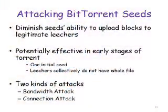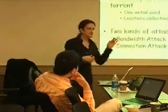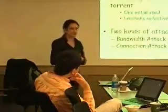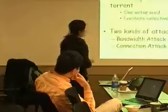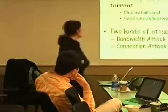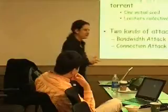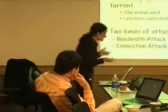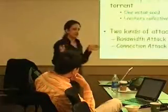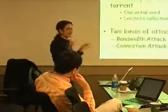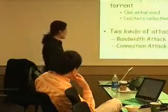Now let's move on to the major focus of today's talk: attacking BitTorrent seeds. The main idea is to diminish the seed's ability to upload blocks to legitimate peers in the swarm, which will extend or lengthen the download time at legitimate peers. This kind of attack is potentially most effective in the early stages of a torrent, when there is only one initial seed — the person who actually started sharing the file — and only a few legitimate peers have connected to the swarm. We identified two different kinds of attacks against initial seeds: the bandwidth attack and the connection attack.